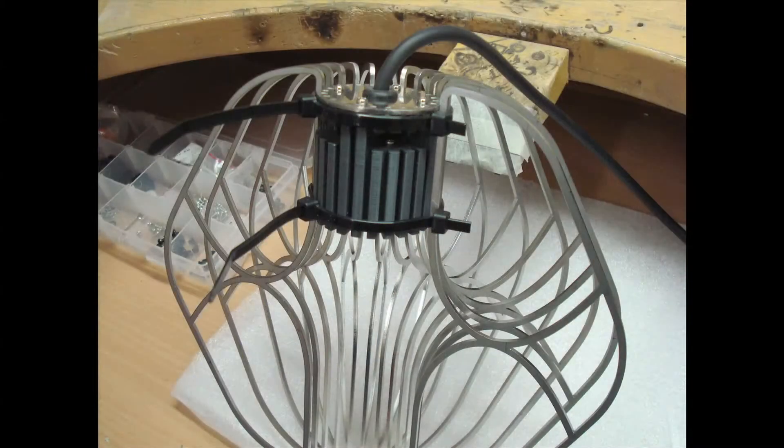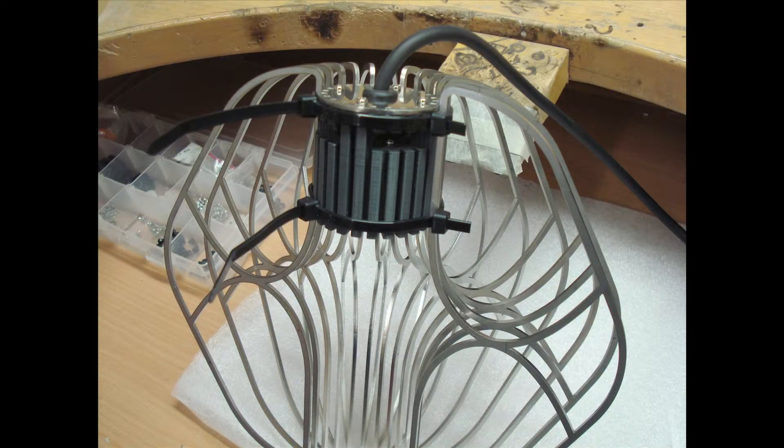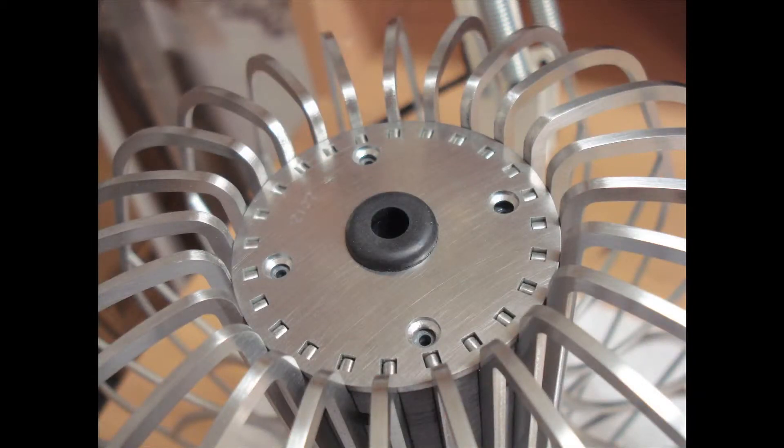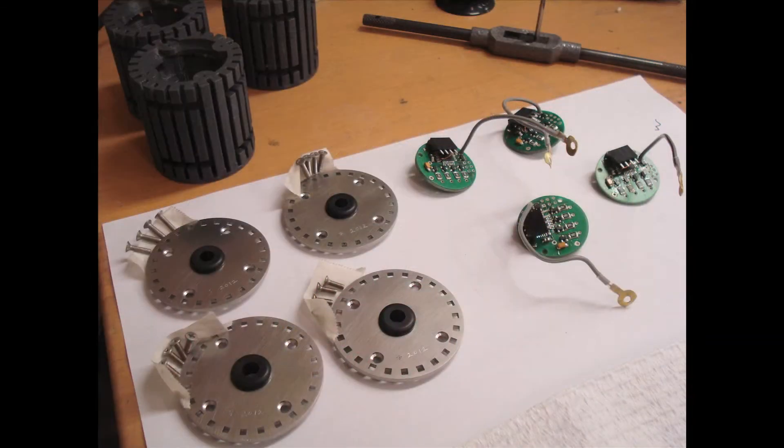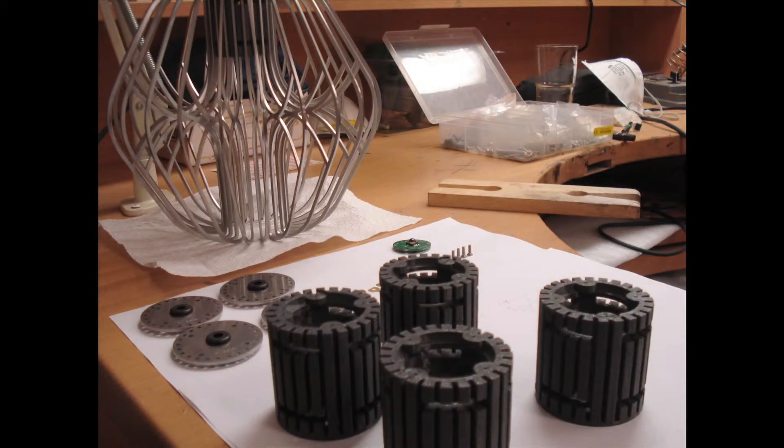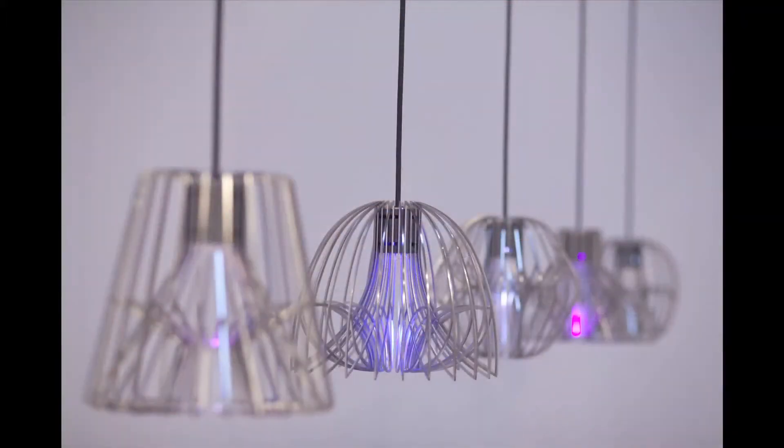Once I've hand finished all the steel components, they need to be assembled, which I also do by hand. They get attached to basically a central socket which houses the electrical circuit and the LED and the program which controls what the lights do.